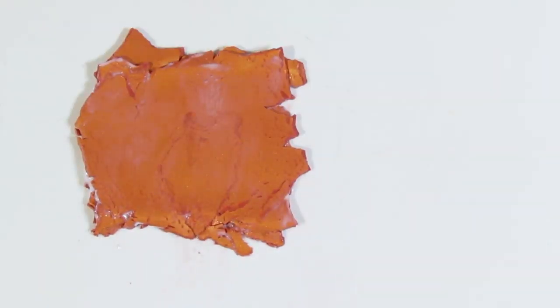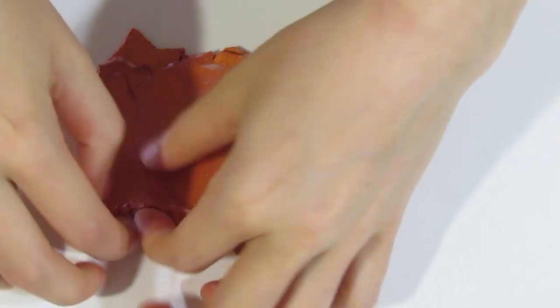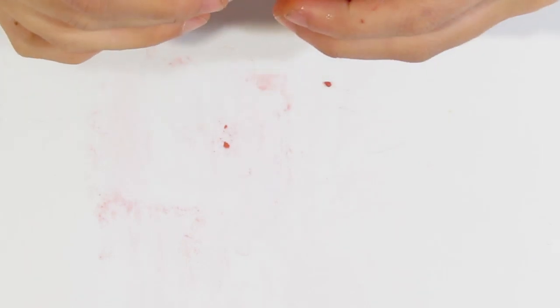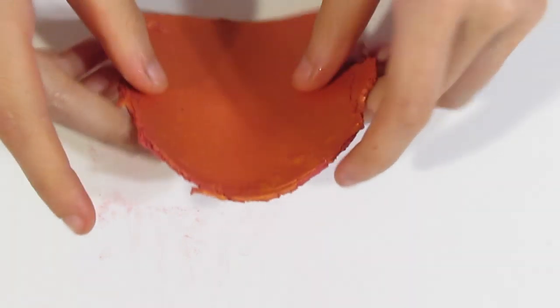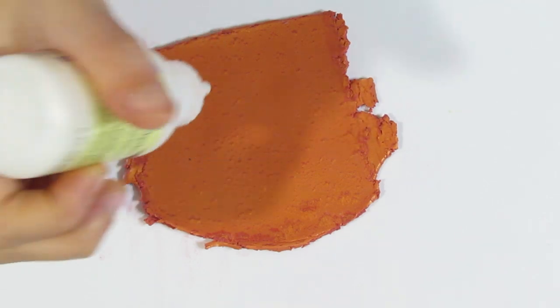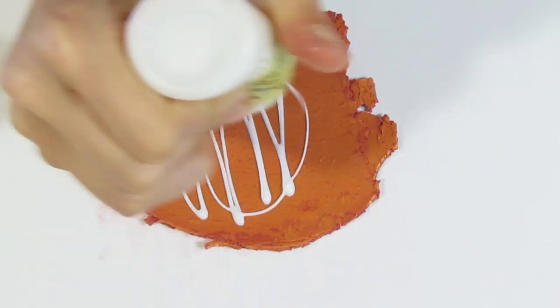Okay, so I have got that all stuck together. So now I am just going to quickly mix this in my pasta machine. Okay, and here is the clay now that I have mixed it. And it is a lot less brittle but I still want to add a little bit more liquid clay just to soften it up some more.